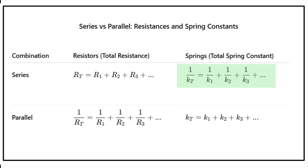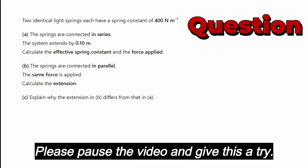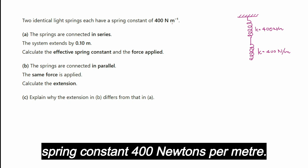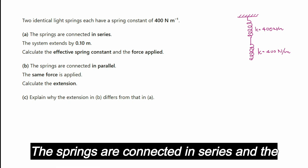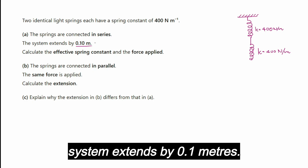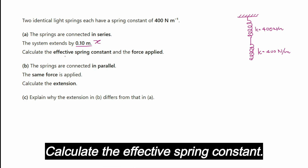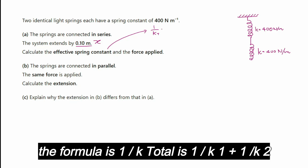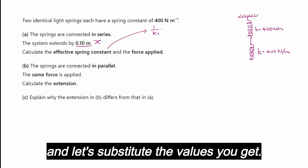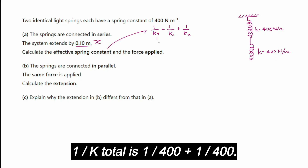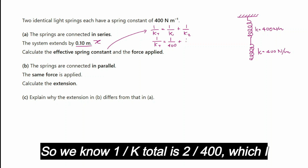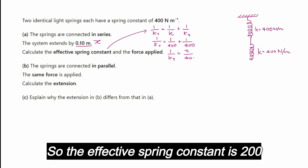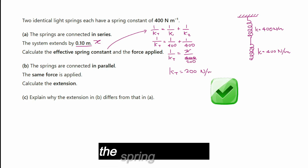Let's put this into practice. Two identical light springs each have spring constant 400 N/m. The springs are connected in series and the system extends by 0.1 m. Using 1 over k-total equals 1 over k1 plus 1 over k2, substituting gives 1 over k-total equals 1/400 plus 1/400, so 1 over k-total equals 2/400. Therefore the effective spring constant is 200 N/m.